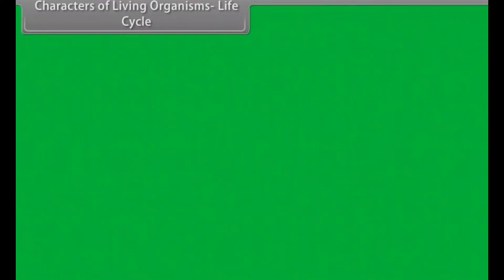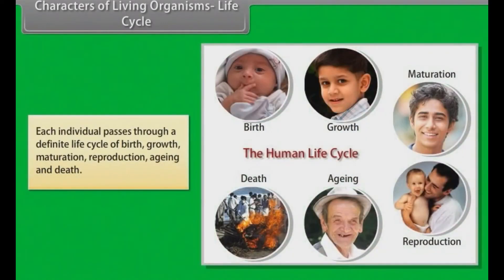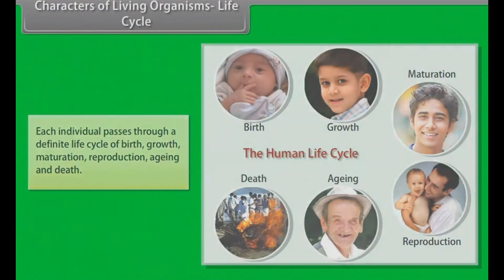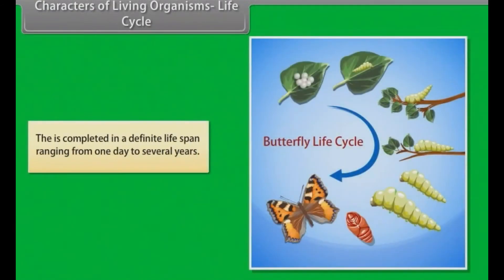Each individual passes through a definite life cycle of birth, growth, maturation, reproduction, aging, and death. This life cycle is completed in a definite lifespan, ranging from one day to several years.